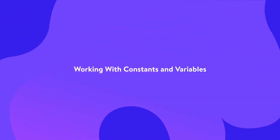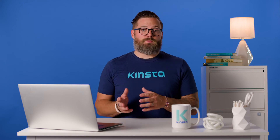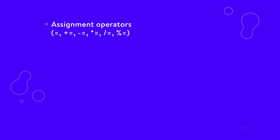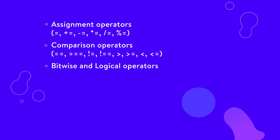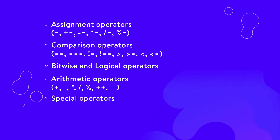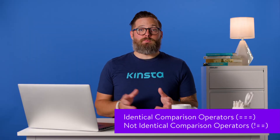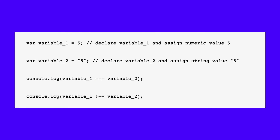As with other languages, JavaScript has several types of operators for use with variables and functions, most of which will be instantly recognizable. You'll see assignment operators, comparison operators, bitwise and logical operators, arithmetic operators, and special operators. A few operators are less familiar to novice programmers, such as identical and non-identical comparison operators. The identical comparison operator compares whether two operands have both the same value and type, while the not-identical operator compares whether two operands are not identical.